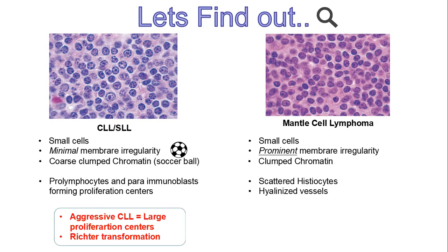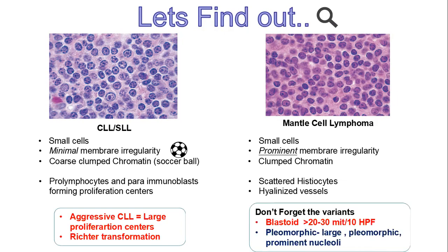CLL can also be very aggressive, though it is considered an indolent neoplasm — especially if the proliferation centers are large. It can also undergo Richter transformation, that is the transformation of CLL/SLL to large B-cell lymphoma. As for mantle cell lymphoma, it has a few variants, two of which are aggressive: the blastoid variant, which has quite a lot of mitoses (20–30 per 10 high-power fields), and the pleomorphic variant, in which cells are large and pleomorphic with prominent nucleoli, appearing very much like large B-cell lymphoma.